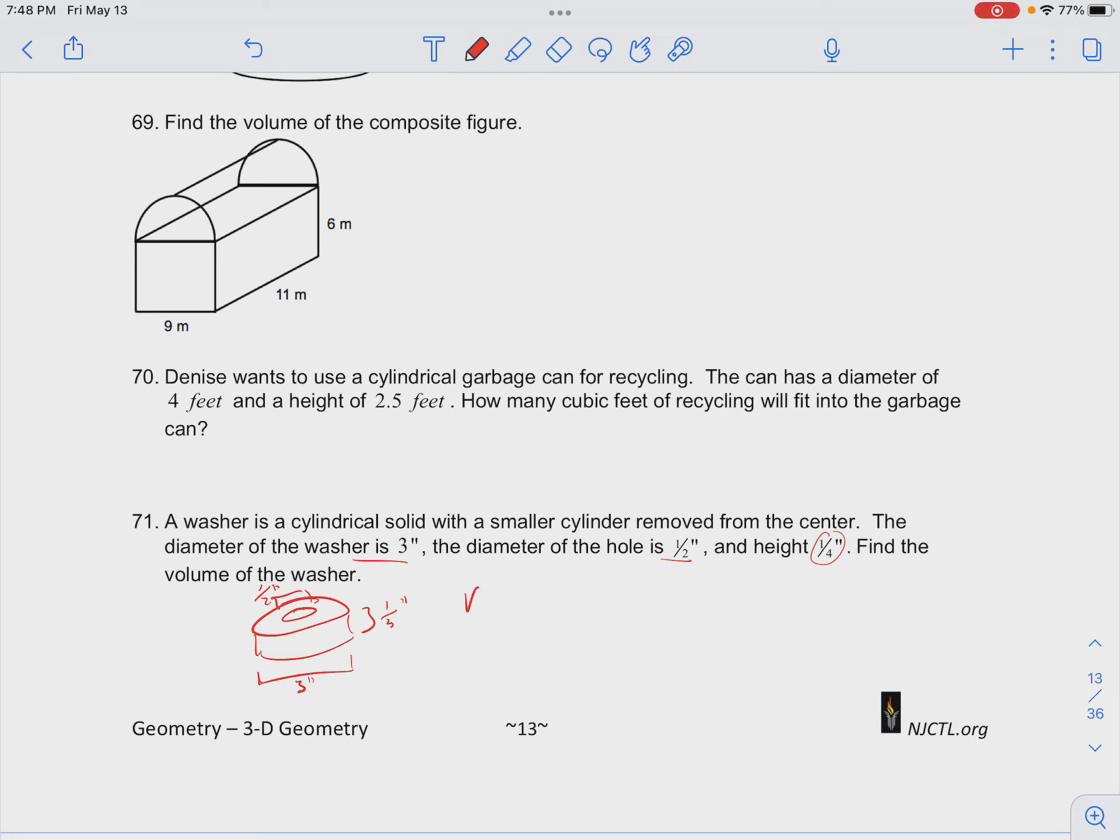So the volume of this washer is going to be given by the volume of the larger cylinder, so the cylinder, let's call this cylinder 2, minus the volume of the inner cylinder.